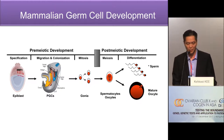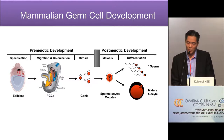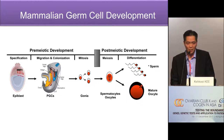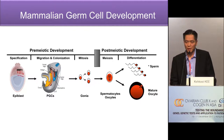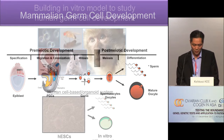I have divided germ cell development into two major stages: pre-meiotic development and post-meiotic development. Because of sex differences, male and female germ cells go into different programs around the late PGC stage. Female germ cells will enter meiosis in the fetal ovary, but male germ cells will go into mitotic arrest and wait until after birth to enter meiosis. After completing meiosis, both male and female go through meiotic division from diploid to become haploid cells — sperm or oocyte.